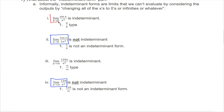However, the limit as x approaches 0 of sine of x divided by x cubed is indeterminate because it wouldn't have been a fair question in the previous section. If you tried to evaluate it, both the top and the bottom of the fraction approach 0. You would have thrown up your hands — you know what to do when it's like 3 divided by 0, those vertical asymptotes. But what about 0 divided by 0?